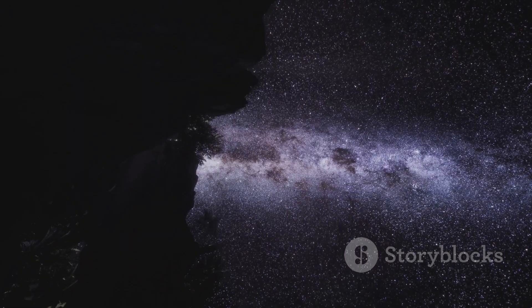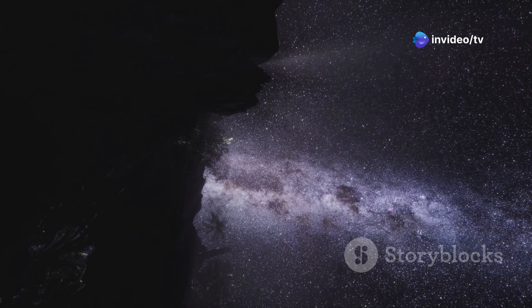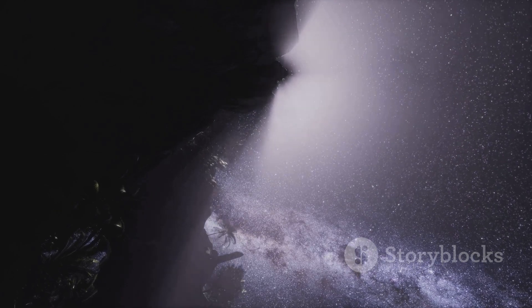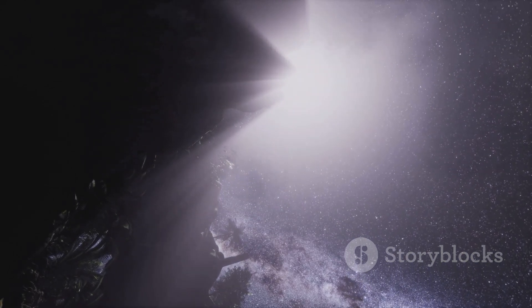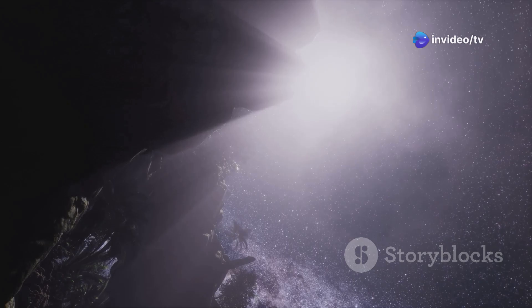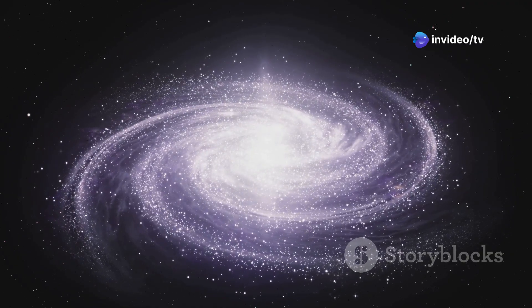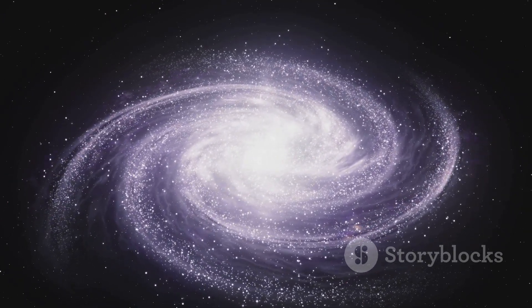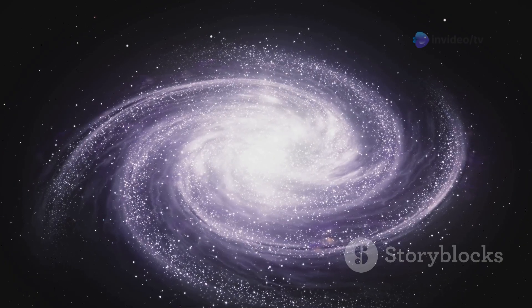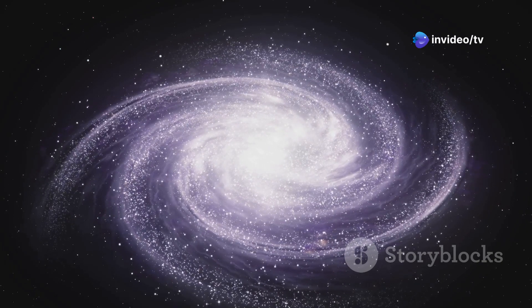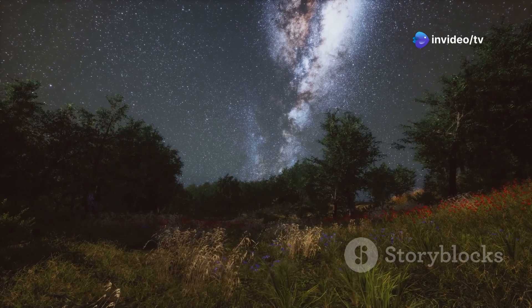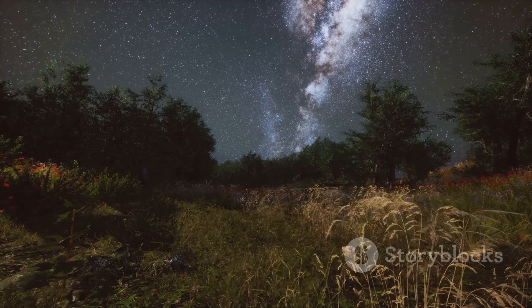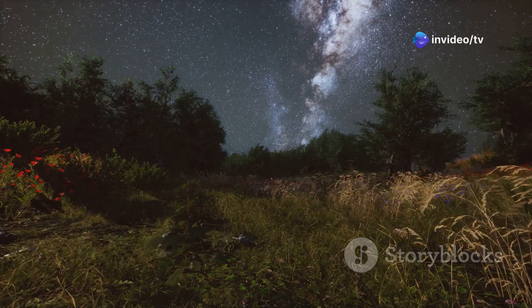Think of our location like this: if the Milky Way were a city, the galactic center would be downtown - a bustling area packed with stars, gas, and dust all swirling around a supermassive black hole. The major spiral arms would be the main avenues where most of the action happens. Our Orion Arm would be a quieter residential street branching off one of those avenues - a more peaceful and stable region where stars like our sun can live out their lives in relative tranquility.